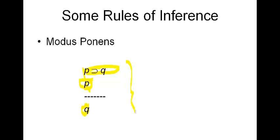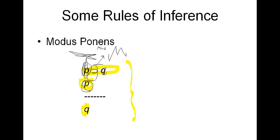When we make use of modus ponens in an inference, we might have all kinds of complexity on either side of the conditional. P and q could each stand for enormously complex sentences, but the point is that they're joined together with the horseshoe, which is the main logical operator. As long as the horseshoe is the MLO, if you have the antecedent on a line by itself, you can conclude the consequent.